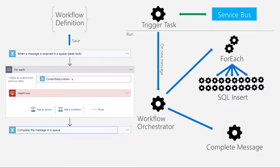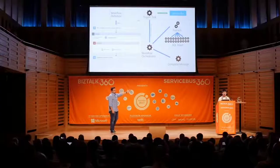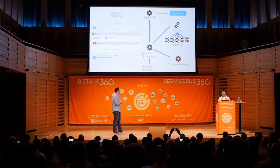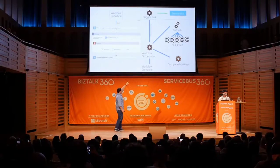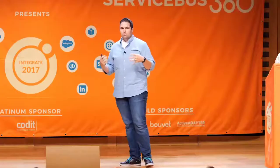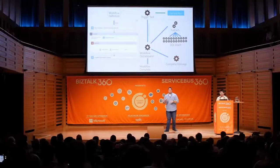The orchestrator then moves to the next step: complete a message task. It assigns that task, it wakes up, does its stuff, and the workflow finishes. A few things to point out: the for-each task could be done on a completely different machine than the complete message task, and my workflow orchestrator might be on a completely different machine than my trigger task. You have no guarantee where your stuff will be executed, just that it will be executed.